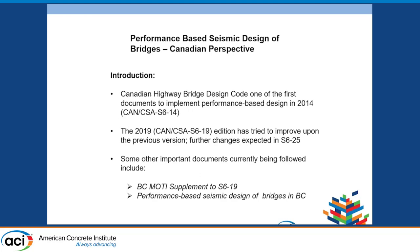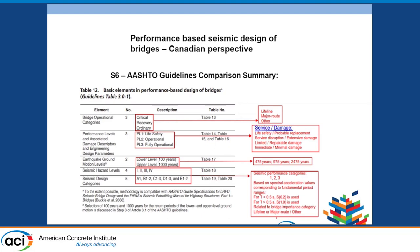What we are calling bridge operational categories are known as bridge importance classification in Canada. You can pretty much draw a one-to-one analogy here: for 'critical' we have 'lifeline,' for 'recovery' we call that 'major route,' and ordinary bridges are referred to as 'other' in the Canadian Highway Bridge Design Code.